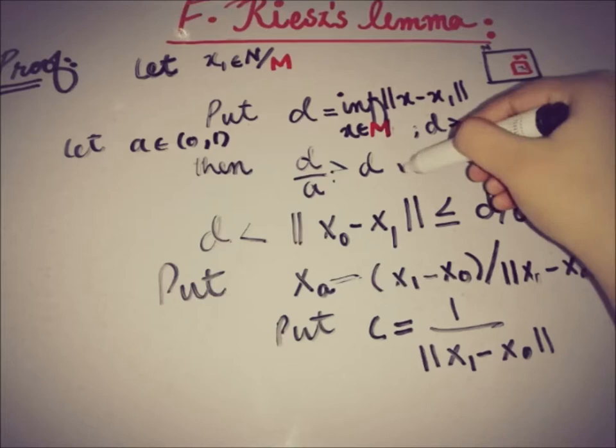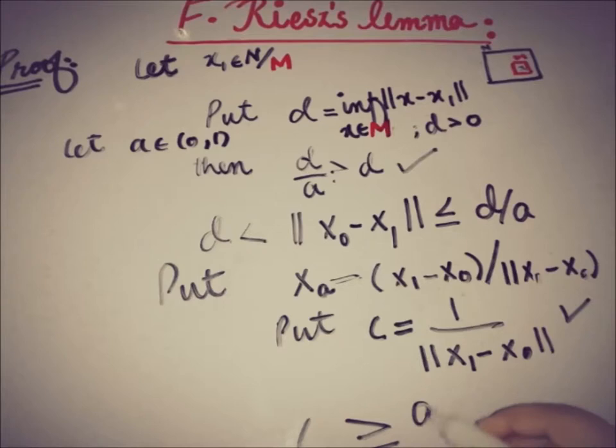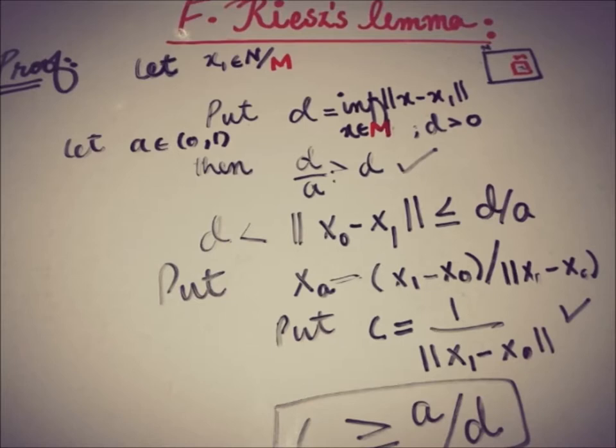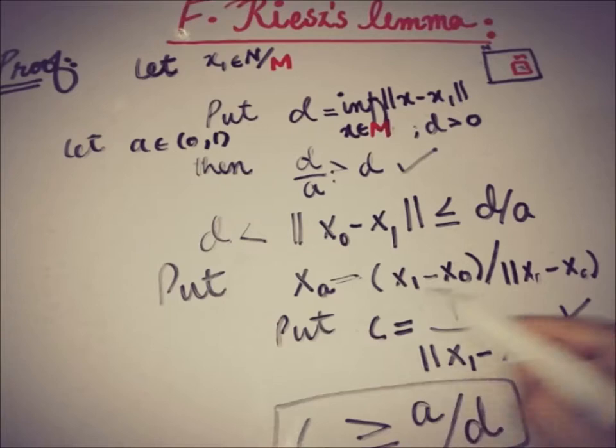From the inequality ‖x₀ − x₁‖ ≤ d/a, we get c = 1/‖x₁ − x₀‖ ≥ a/d. Here x_a is in N with ‖x_a‖ = 1.